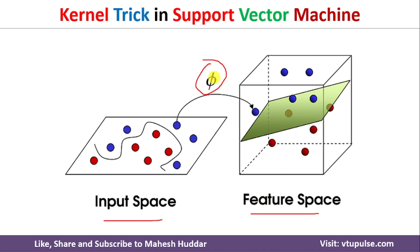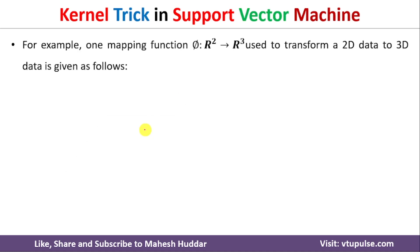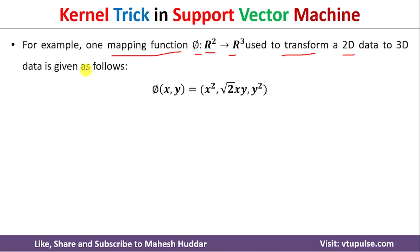The particular mapping function depends on the given dataset. We will take an example to understand this. Let us say that phi is a mapping function from R² to R³ — that is, we want to transform data from 2D to 3D. The mapping function for (x, y), a 2D data point, looks like this: phi(x, y) = (x², √2·xy, y²).